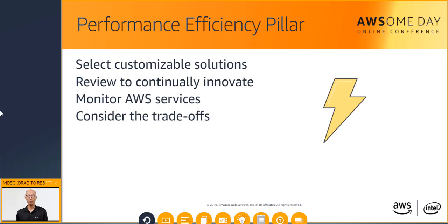Now let's look at the performance efficiency pillar. The four pieces that make up performance efficiency in the cloud include selection, review, monitoring, and trade-offs. With selection, it is important to choose the best solution that will optimize your architecture. However, these solutions vary based on the kind of workload you have.